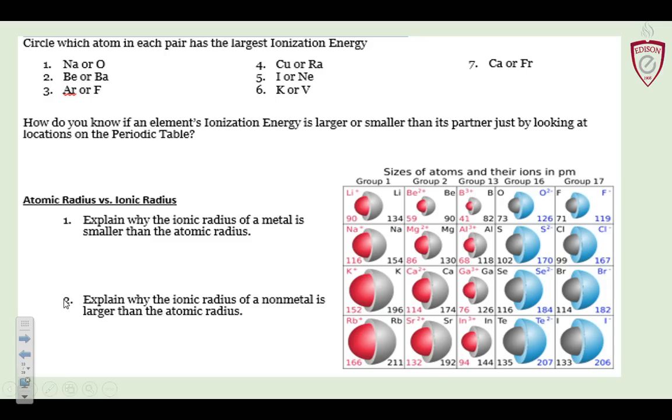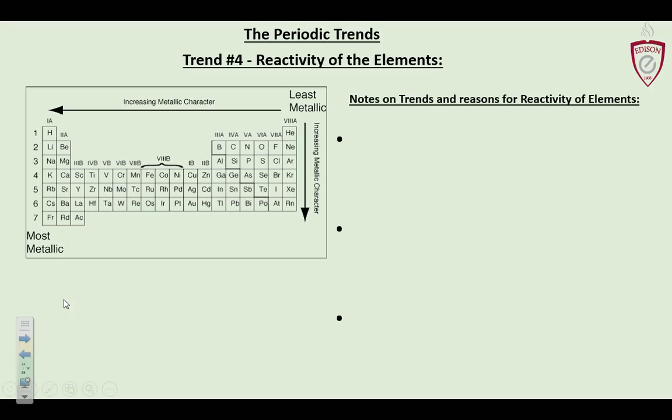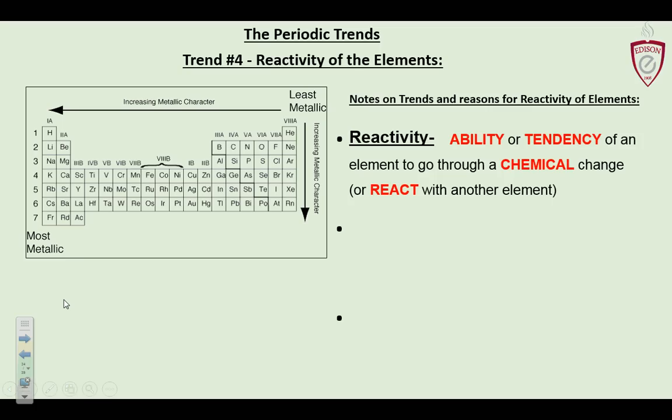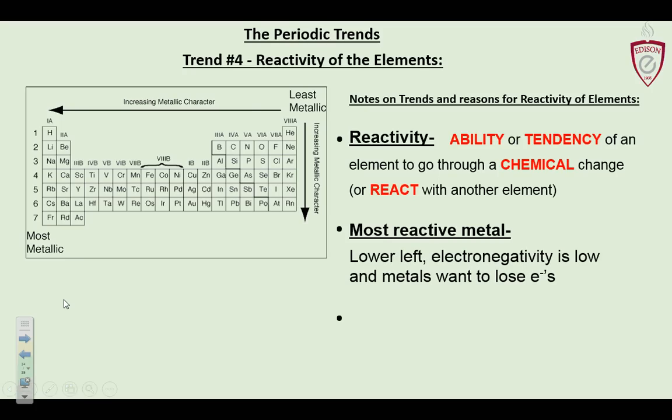One more quick trend: reactivity. This is the ability or tendency of an element to go through a chemical change — to react with another element by losing or gaining electrons. It's almost two trends in one: the ones who gain electrons really well are very reactive, and the ones who lose electrons very well are also reactive. Think of two prize fighters in opposite corners of the ring. The most reactive metal is in the lower left-hand corner — very low electronegativity, metals want to lose electrons, and if they're not holding on to that outside electron very much, they'll lose it fast. So francium, cesium, barium, radium are the most reactive metals.